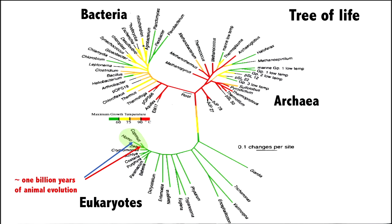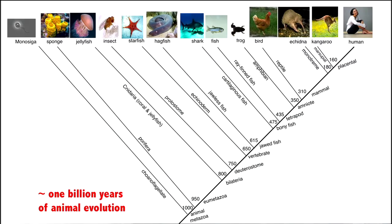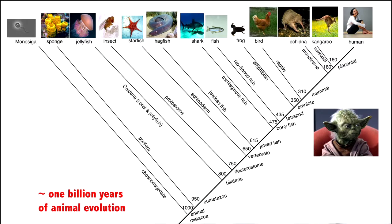Let's take a look at the phylogenetic tree of life during that billion years. Here we have humans on the upper right, and a relative — a kangaroo — with a common ancestor 160 million years ago. Humans and kangaroos share a common ancestor with monotremes, like the Echidna, about 180 million years ago, and so on. This tree represents a billion years of animal evolution. We'd like to know: if we were to put Yoda on this tree, where would we put him?